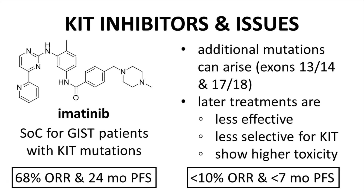Unfortunately, even with treatment with imatinib, genes encoding KIT can undergo additional mutations that confer resistance to imatinib. Once additional mutations are detected, different KIT inhibitors are the best option for patients. These later treatments, even though they are targeted to advanced KIT mutations, have reduced patient benefit based on response and survival. Furthermore, the later drugs show higher toxicity. This situation describes an unmet medical need — a need for new KIT inhibitors for treating patients with advanced GISTs that are resistant to imatinib.